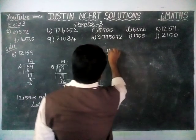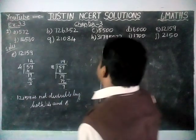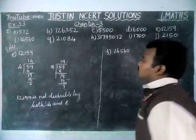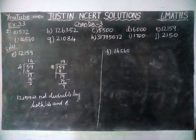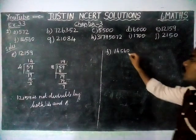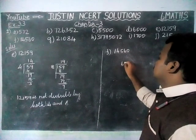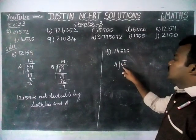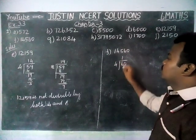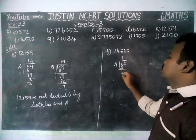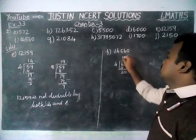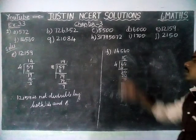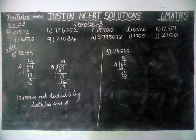Next, option F: 14,560. According to the divisibility rule for 4, we take the last 2 digits, which are 60. Dividing 60 by 4: in 60, 1 four is there, remaining 2, giving 20. 5 fours are 20, remaining 0. So the given number is divisible by 4.